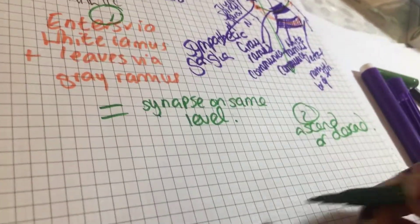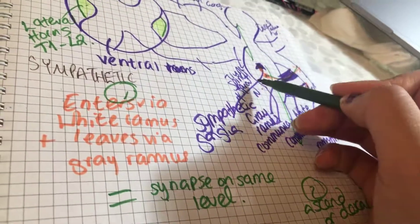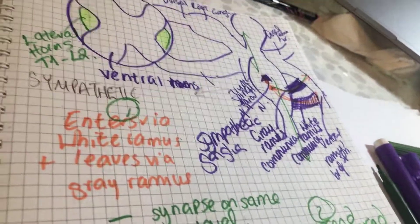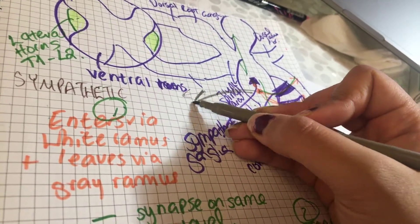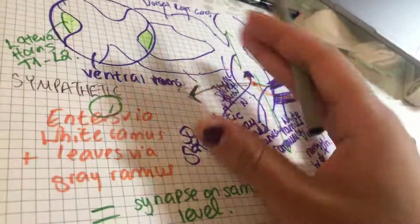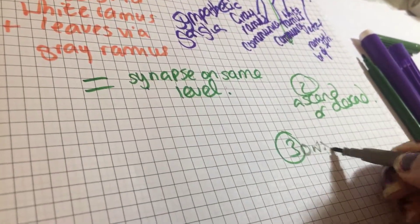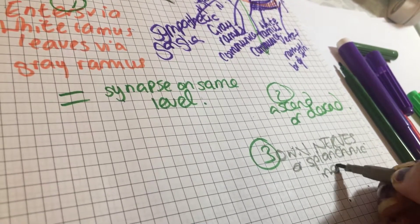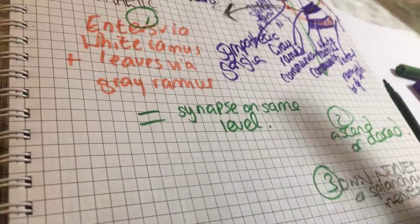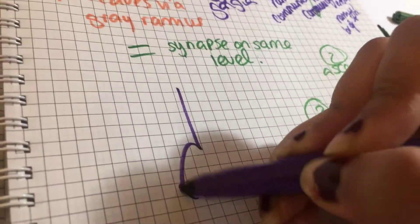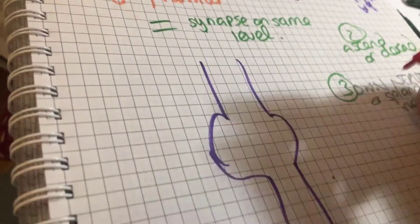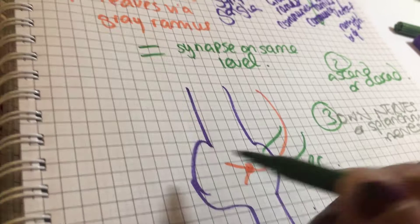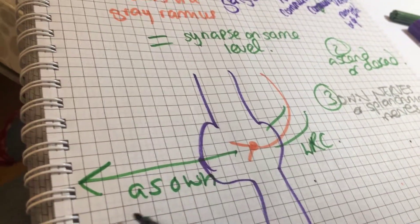The other thing that it can do is it can, instead of synapsing with a nerve inside, it can form another nerve entirely and leave. It can go out of the sympathetic ganglion via another nerve entirely. And these are called splanchnic nerves. They will come in and they will synapse. Instead of coming, they will come in via the white ramus communicans, but they will just leave as their own splanchnic nerve.